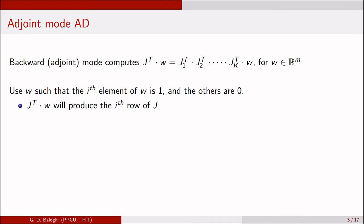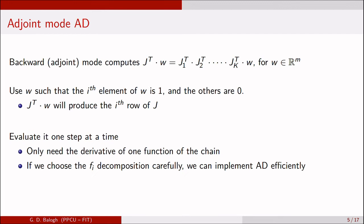And for most applications, especially from finance, this information is sufficient. So to do backward mode AD we need the derivative of one function of the chain at a time.